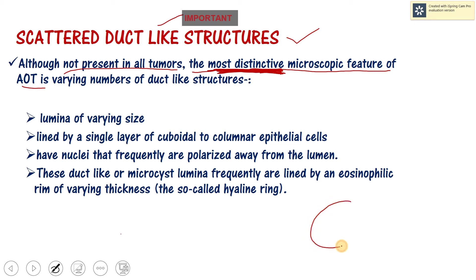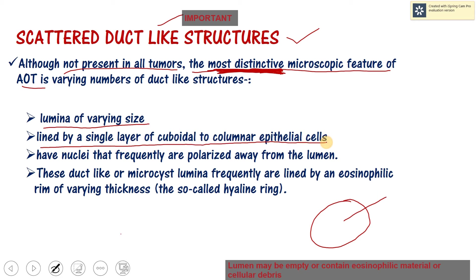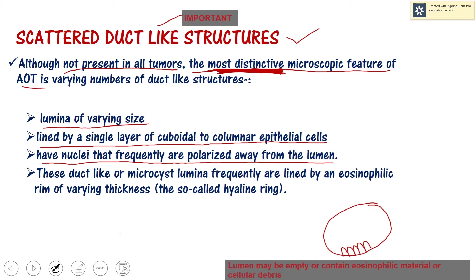These duct-like structures have specific features. The lumina are of varying size. They are lined by a single layer of cuboidal to columnar epithelial cells. Importantly, the nuclei are frequently polarized away from the lumen — the nuclei are not towards the lumen but away from it.